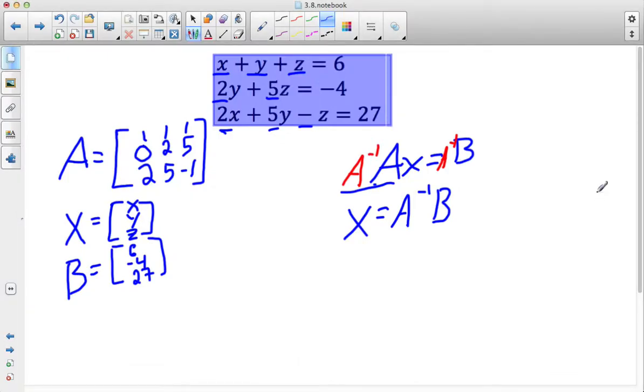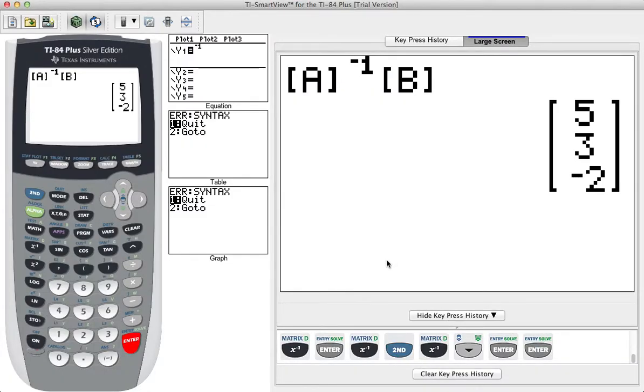So down here, remember my X matrix is going to be X, Y, Z. Now I have 5, 3, negative 2.